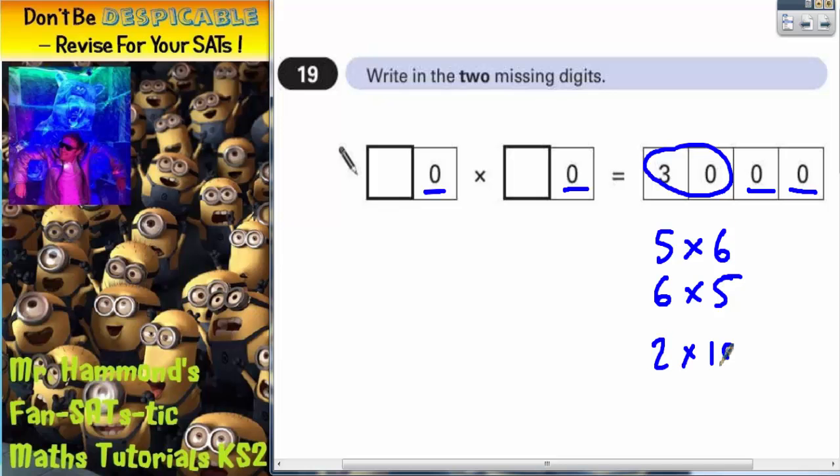So we could have 2 times 15, we could have 3 times 10. But 15 and 10 are two digit numbers and we can only put one digit in there and one digit in there. So that's going to be no use.